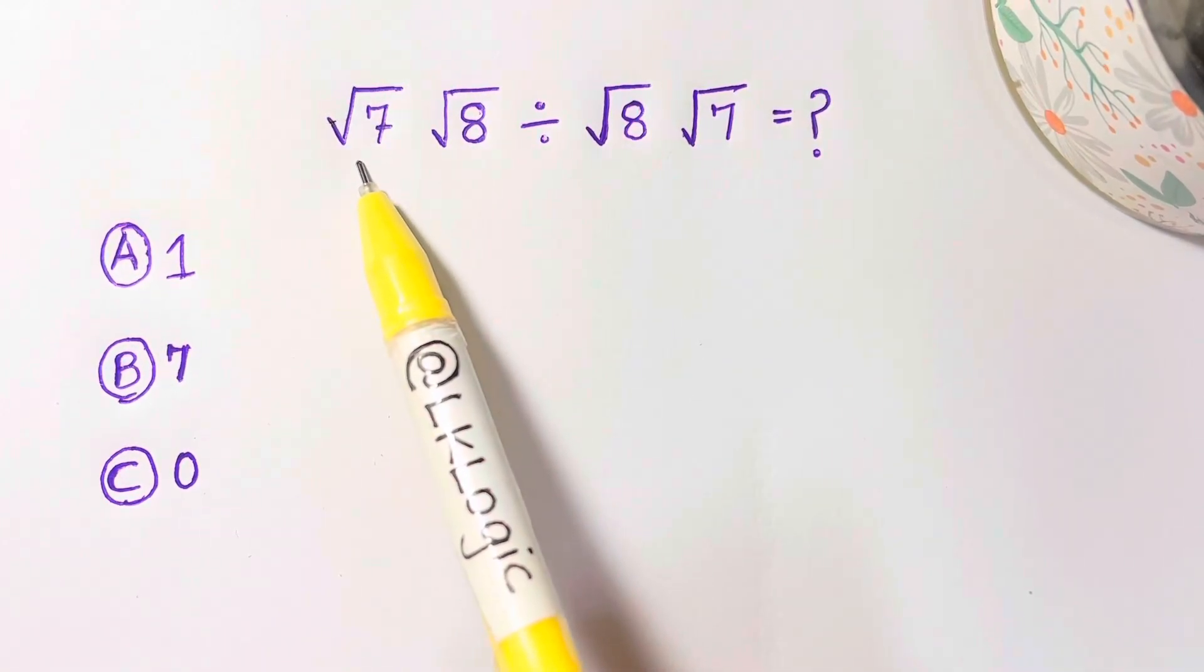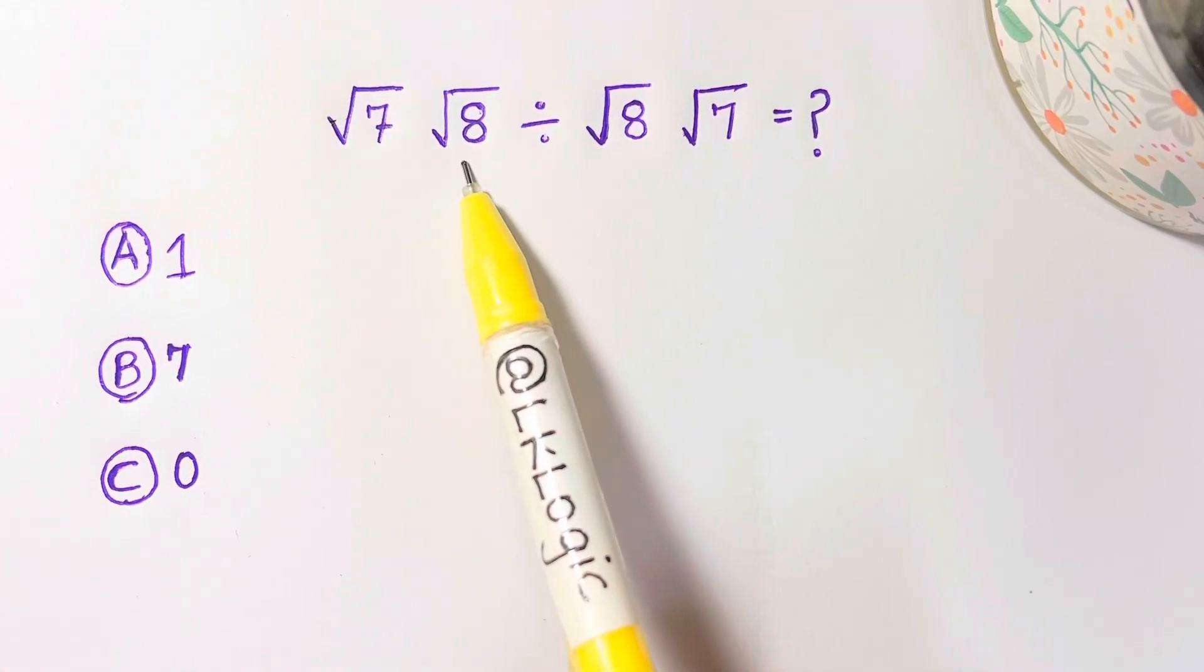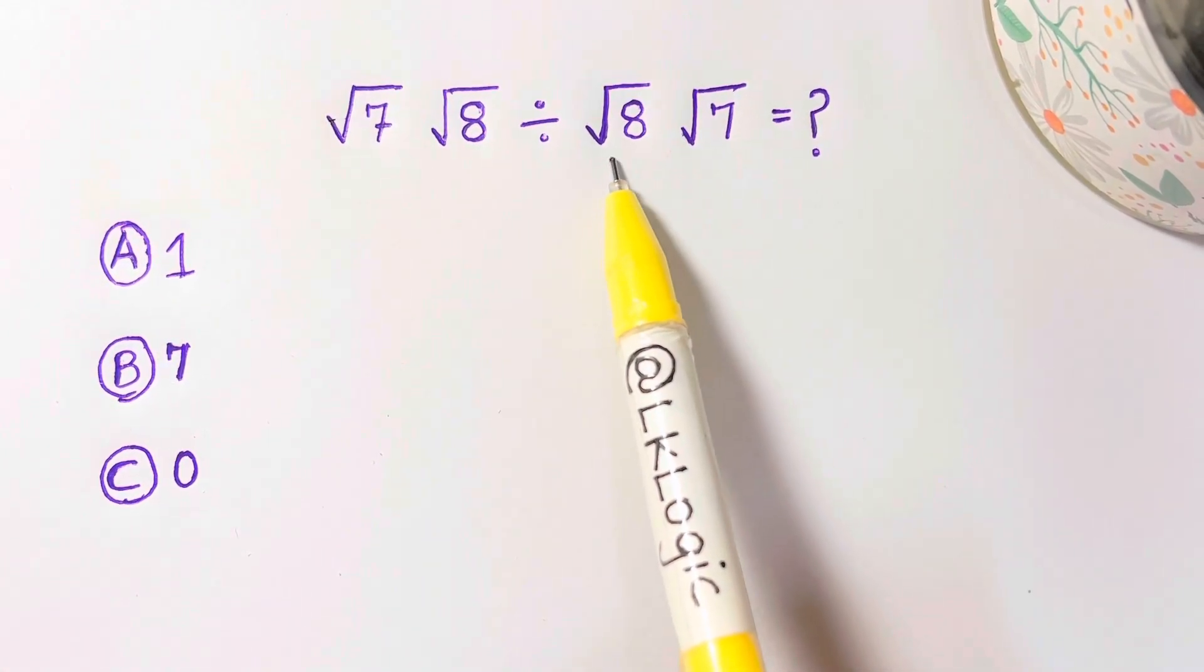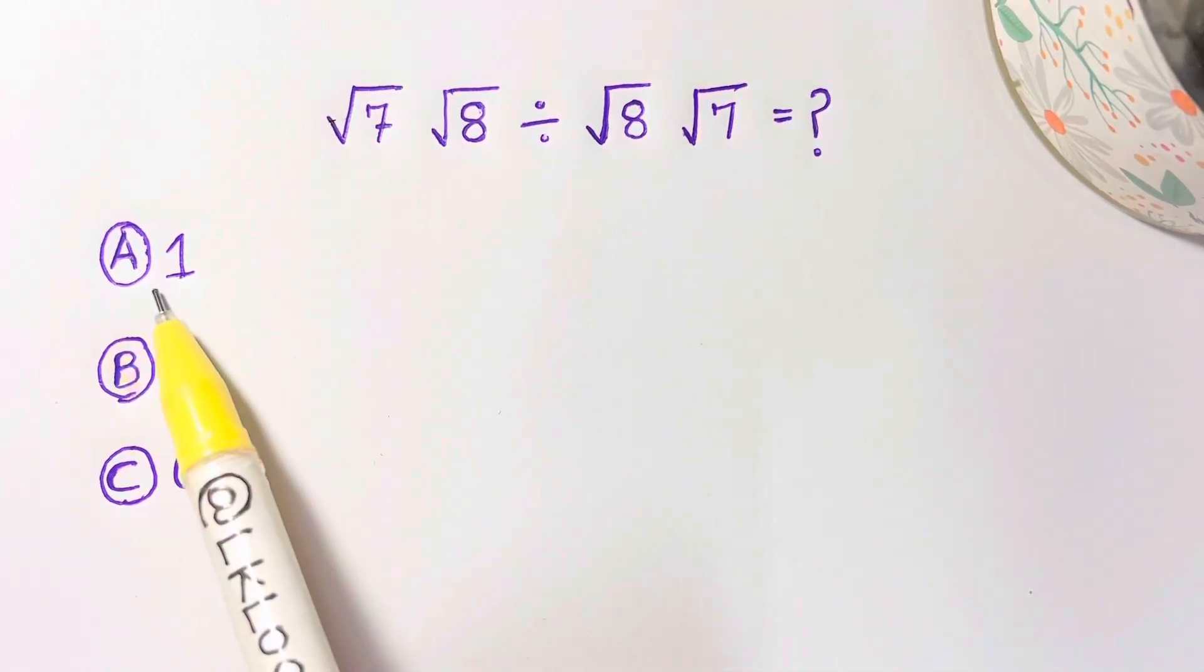Hi guys, I have to solve a nice radical problem which is square root of 7 times square root of 8 divided by square root of 8 times square root of 7 equals what? Is it 1 or 7 or 0?